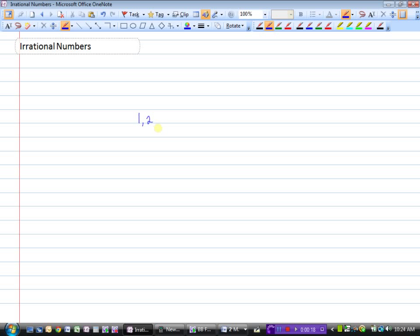Like one, two, three, four, five. These we call natural numbers. So the natural numbers are 1, 2, 3, 4, 5, 6, 7, and so on and so forth.